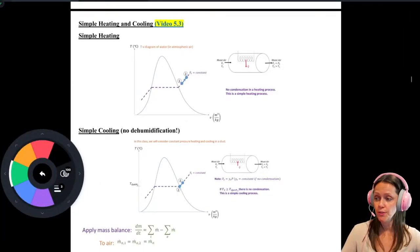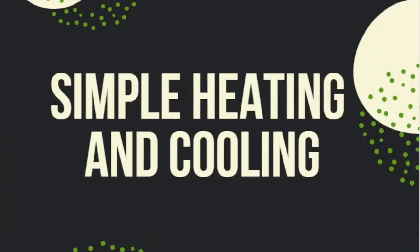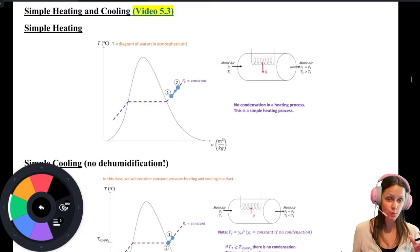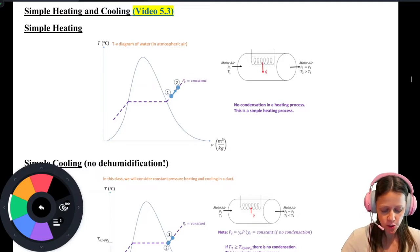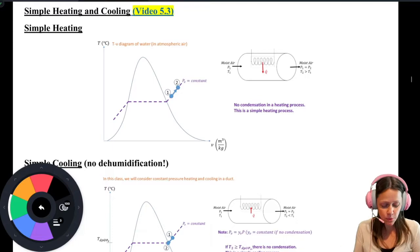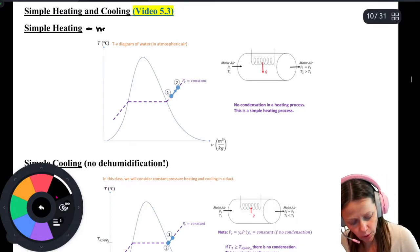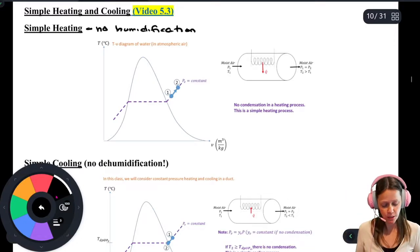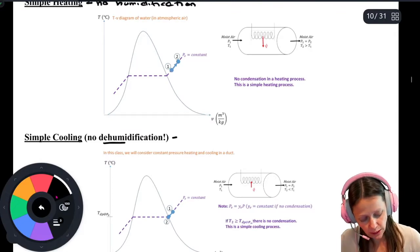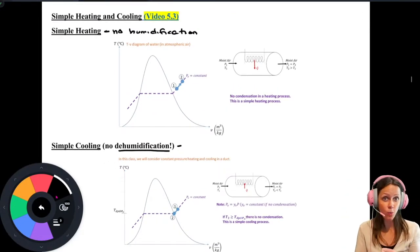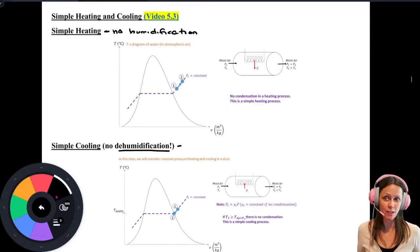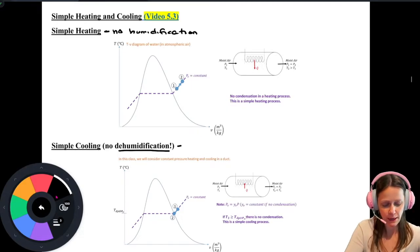The next topic is simple heating and cooling — video 5.3 covers it in more detail. With simple heating and cooling, 'simple' indicates there is no humidification. Simple heating means no humidification; simple cooling means no dehumidification. In other words, you're not adding water by humidifying the air, and you're not removing water by allowing condensation to occur.